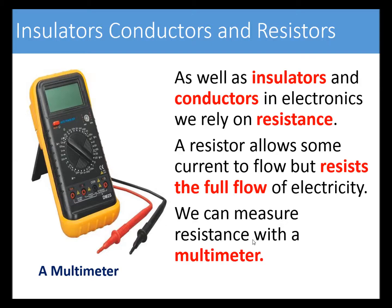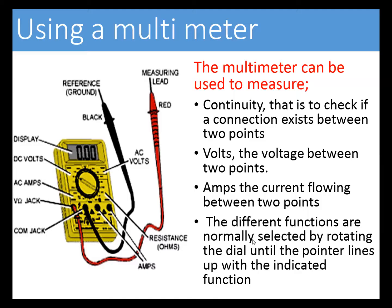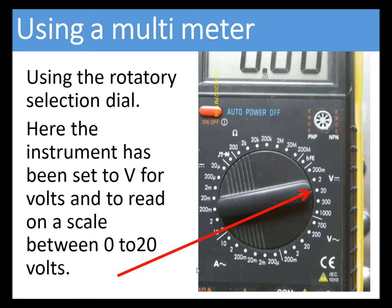As well as insulators and conductors, in electronics we rely on resistance. A resistor allows some current to flow but resists the full flow of electricity. We can measure resistance with a multimeter. The multimeter can also measure continuity — checking that a connection exists between two points — as well as voltage and amps. The different functions are selected by rotating a dial. Here you can see a close-up of a multimeter set to read voltage from 0 to 20 volts, which is the setting you'd typically use in the classroom.